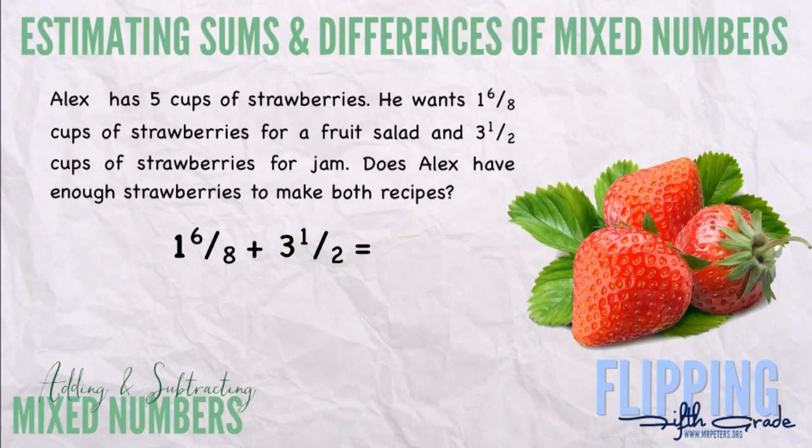To do this problem, we want to round to estimate. So one and six-eighths, we're seeing if it's closer to one or two. Now six-eighths is greater than a half because four-eighths is a half, so we're going to estimate that to two.